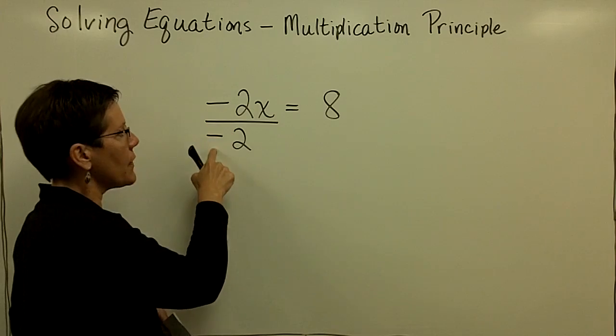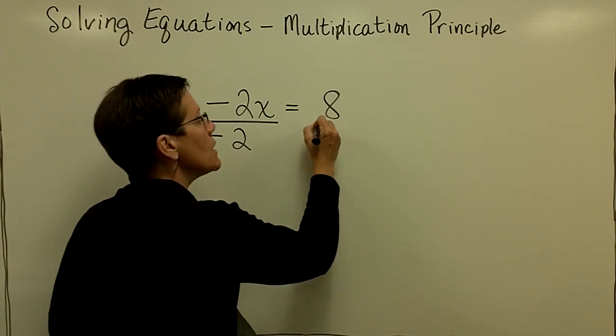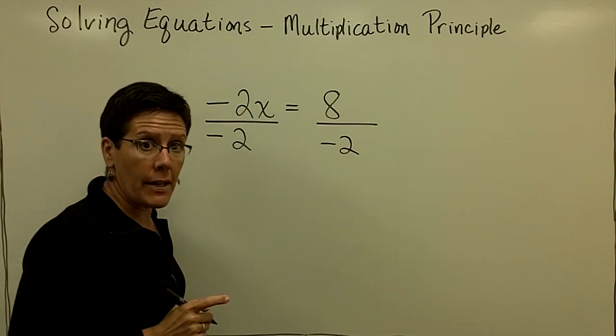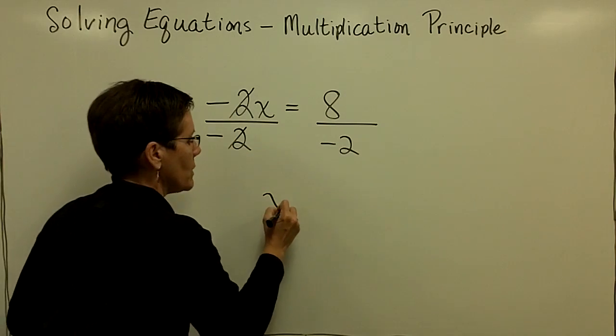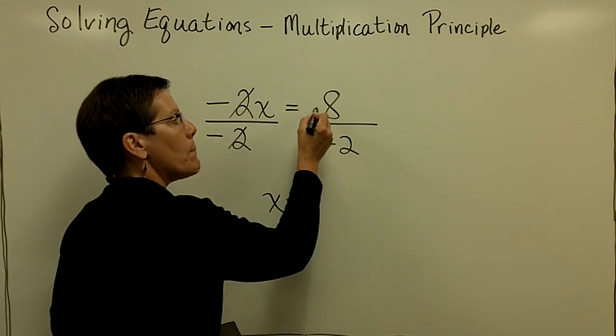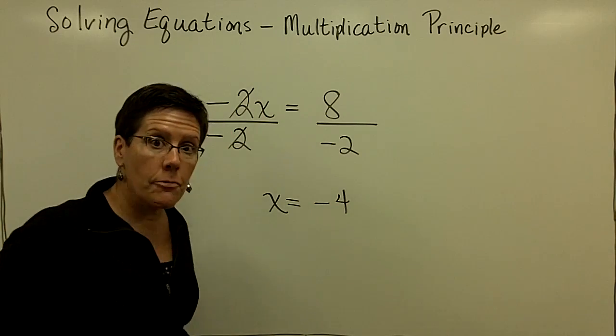Please don't forget that because this negative divided by a negative will give you a positive 1. If I divide the left side by a negative 2, I have to divide the right side by a negative 2. Again, those are gone. It gives me x equals, and a positive 8 divided by a negative 2 is a negative 4.